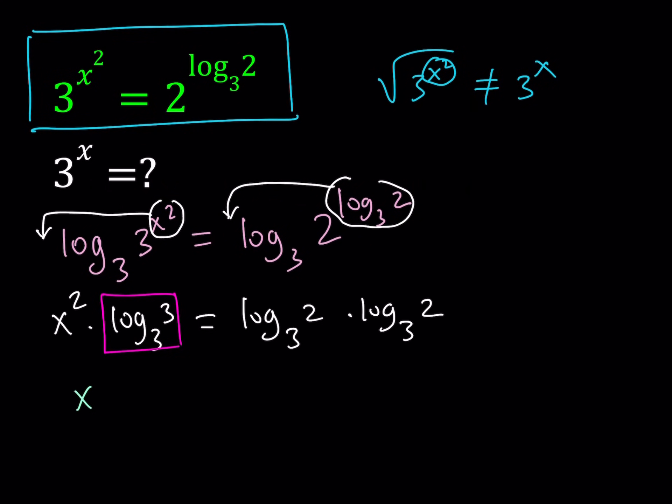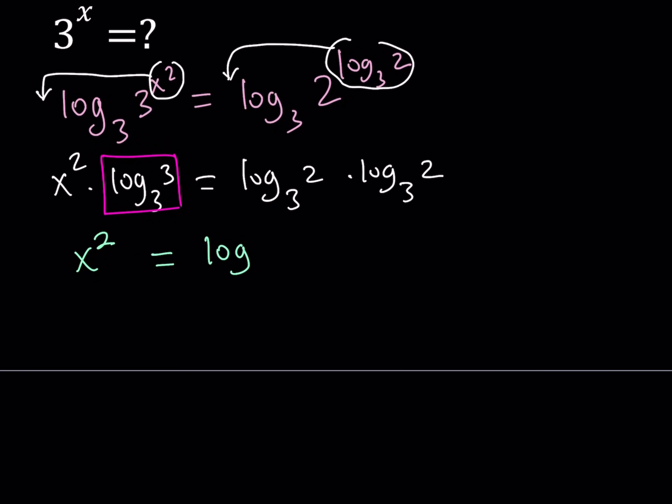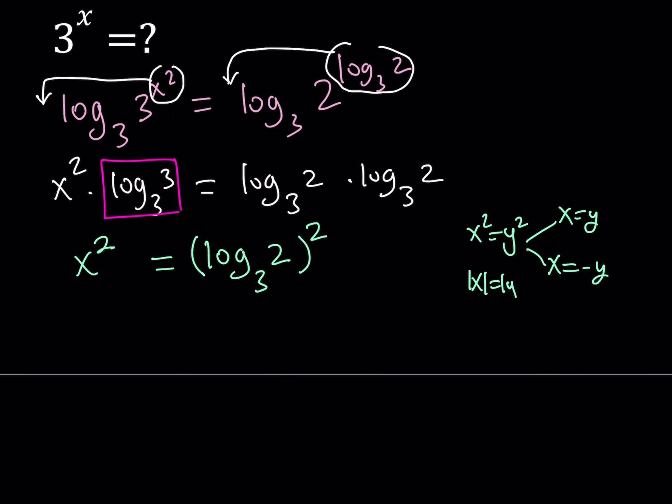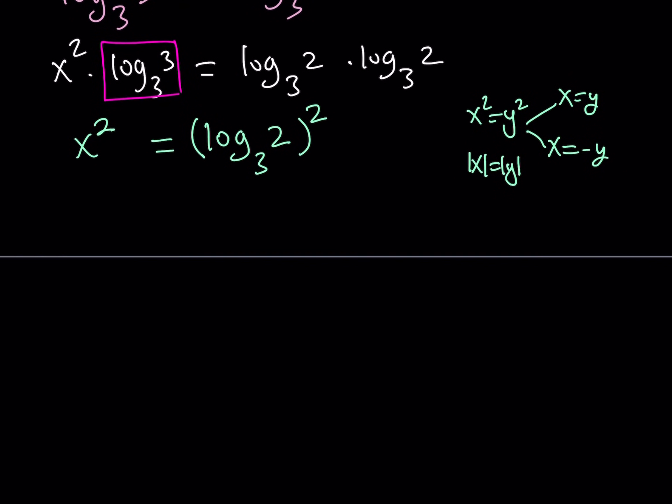So this is what I'm getting from the left-hand side, x squared, and on the right-hand side I can write my expression as log 2 with base 3 squared. Now, as you know, if x squared equals y squared, then this equation has two solutions: either x equals y or x equals negative y, just like the absolute value. So from here, we're talking about real numbers, so I can write the following: x is either log 2 with base 3 or x is negative of the same thing. They are opposites because when you square them you'll get the same answer.